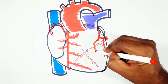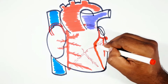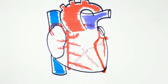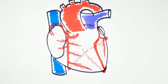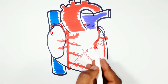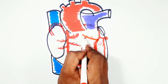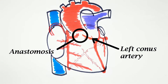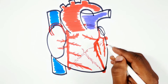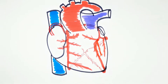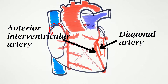The anterior interventricular artery runs down in the anterior interventricular groove and anastomoses with the posterior interventricular artery under the apex of the heart. It is the cardiac vessel most often affected by disease. It gives off several left ventricular branches; the diagonal branch is the largest. It ends by trifurcation, and may arise separately from the left coronary trunk.